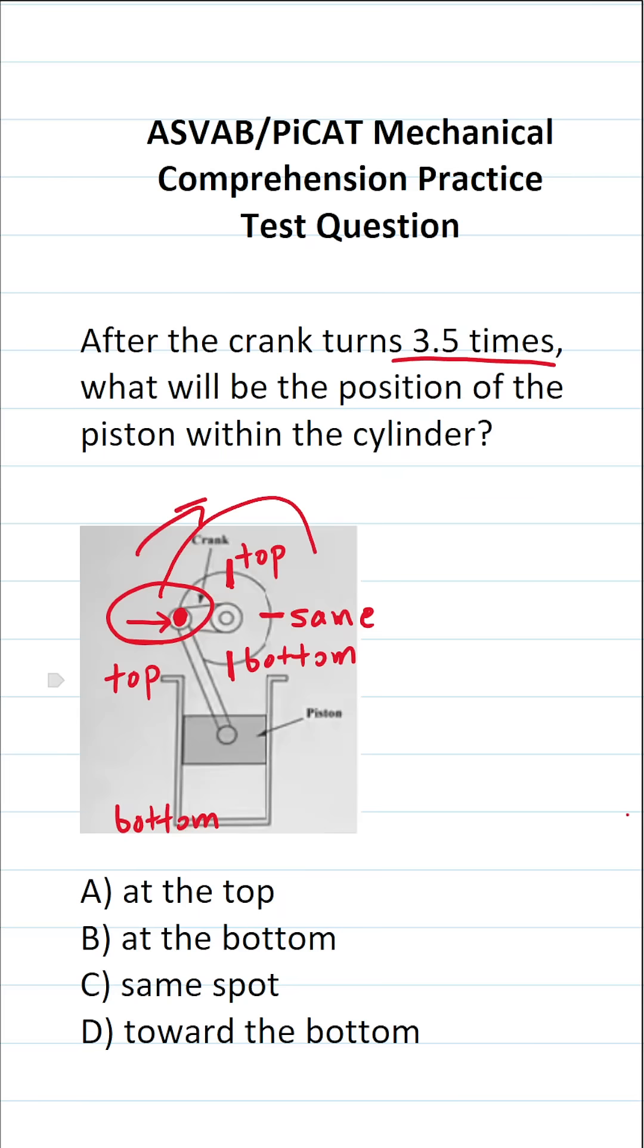So half of a rotation puts us right here. The crank's in this position, and as I just mentioned, that means the piston is going to be in the same spot. So the answer to this one is C, same spot.